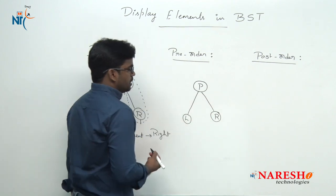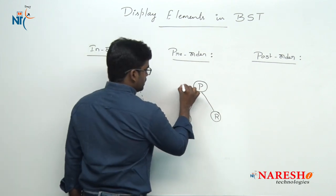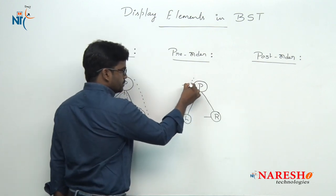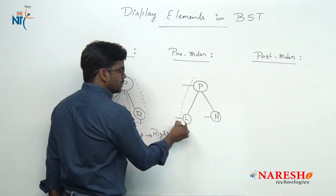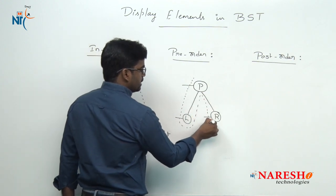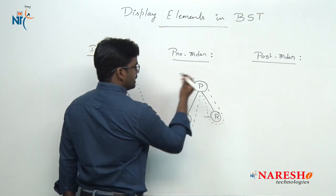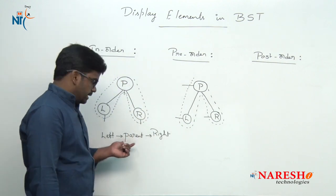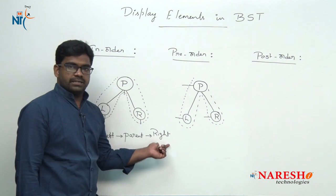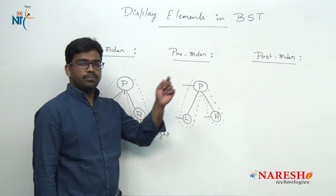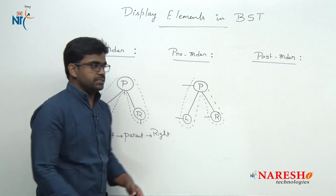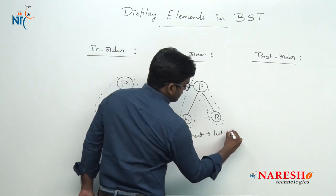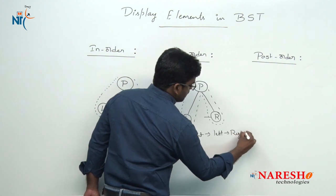In pre-order traversal, the parent is connected first, then the left child, then the right child. The parent precedes the left and right children. So the order is: first parent, next left child, next right child. In pre-order, the parent comes before the left and right children.